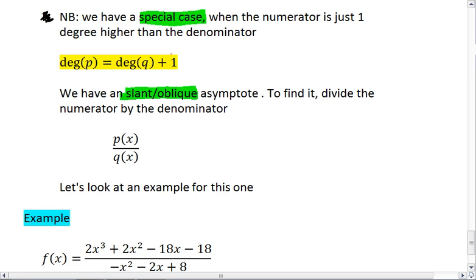When this happens, we have what's called a slant or oblique asymptote. To find it, we're going to divide the numerator by the denominator.